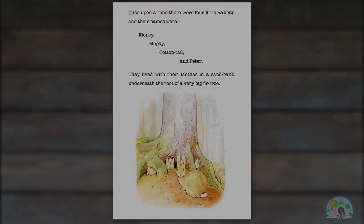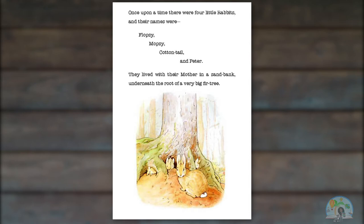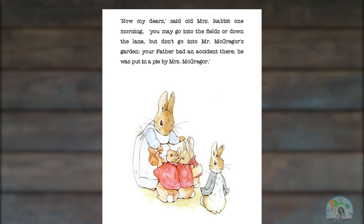Once upon a time, there were four little rabbits, and their names were Flopsy, Mopsy, Cottontail, and Peter. They lived with their mother in a sand bank, underneath the root of a very big fir tree. Now, my dears, said old Mrs. Rabbit one morning, you may go into the fields or down the lane, but don't go into Mr. McGregor's garden. Your father had an accident there. He was put in a pie by Mrs. McGregor. Now run along, and don't get into any mischief. I am going out.